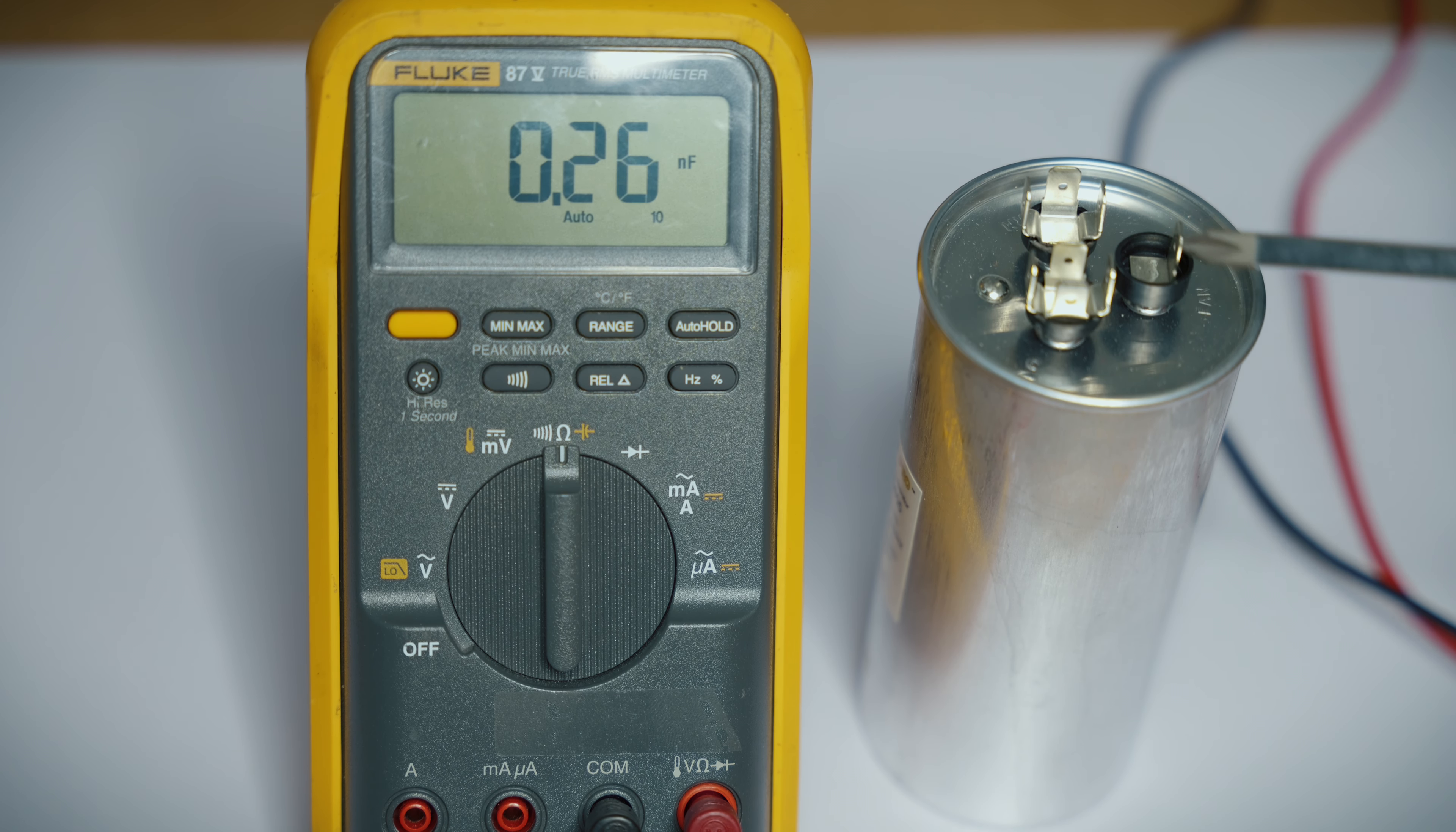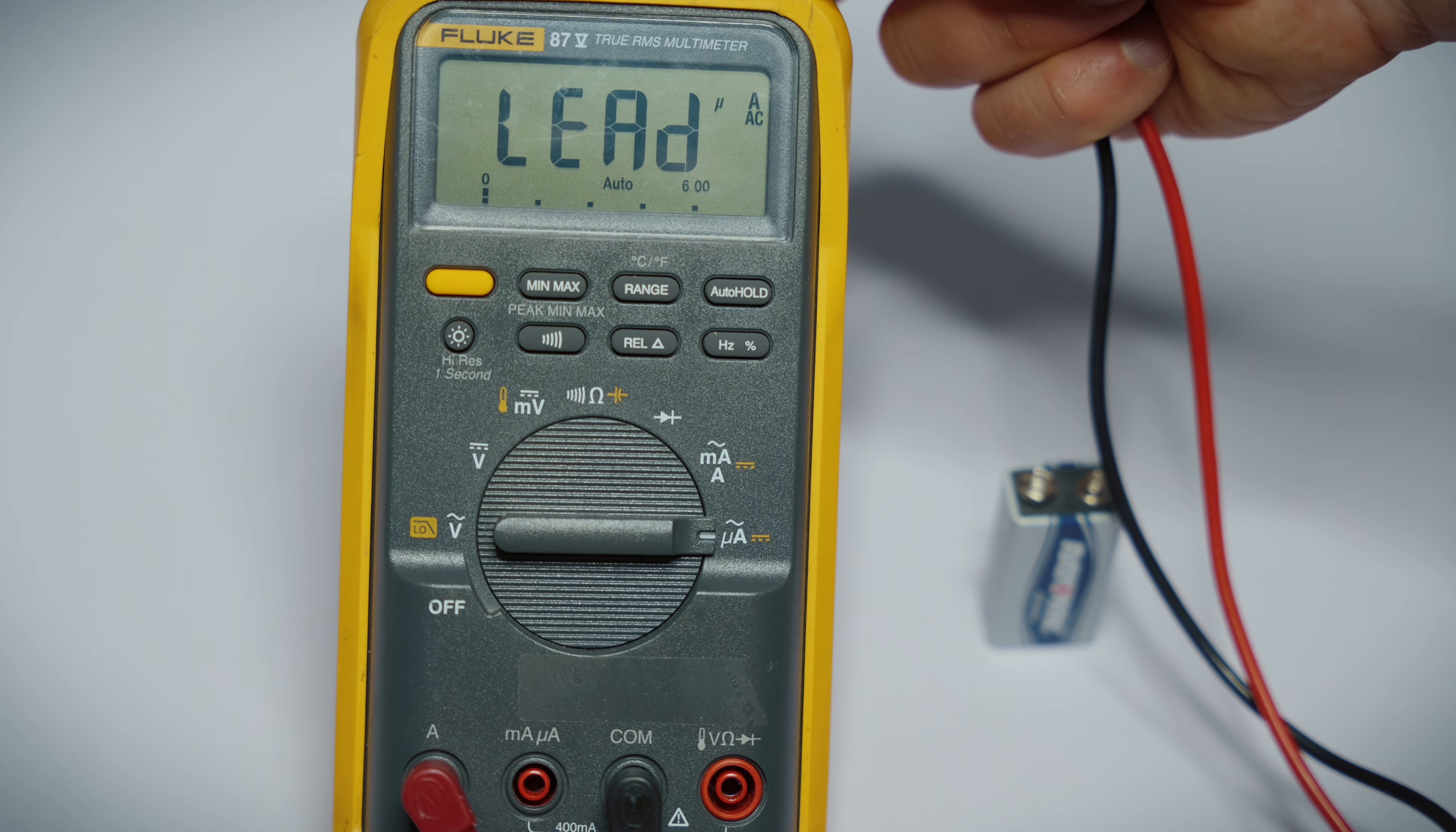Now for AC amperage checks, we'll have to shift it back to the AC. That's the wavy line. Now to check an AC circuit, you're going to have to insert one lead to the power wire disconnected. And the other lead will go to where the power wire was disconnected from. So you're essentially putting your meter in series with the disconnected circuit.